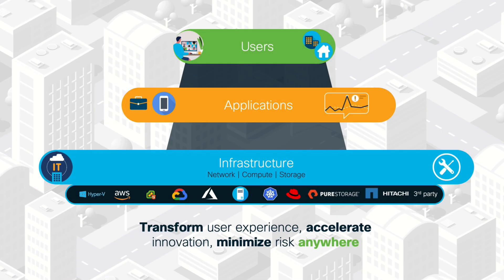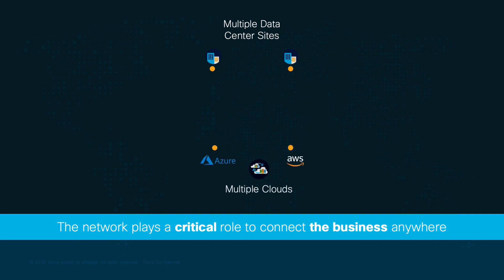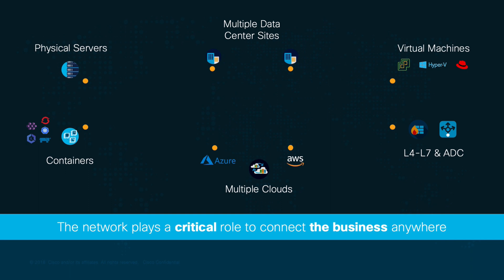One of the main goals of IT is to connect users and devices to applications anywhere they may be, and the network plays a fundamental role to connect the digital business, since it touches everything — whether that means a single campus or multiple data centers, one or many clouds, and multiple form factors such as physical, virtual, and container-based platforms integrating Layer 4 and Layer 7 services.